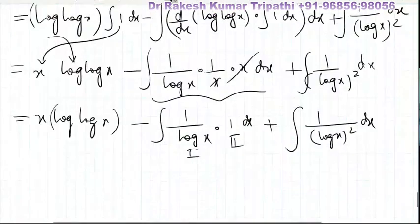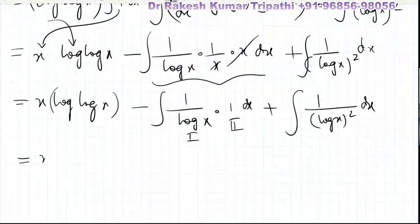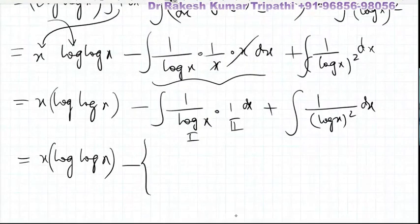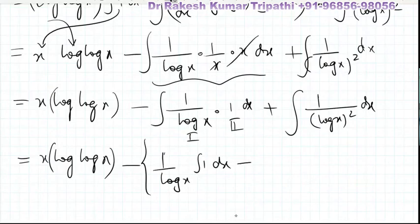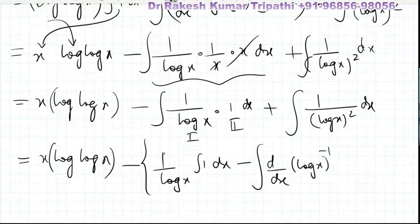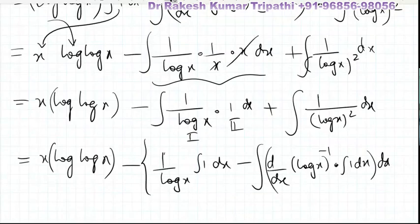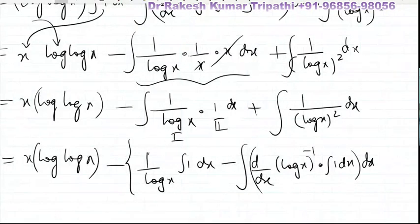So again integration by parts is to be applied: x·log(log x) minus — first function constant, 1 by log x constant, integration of the second function — minus the differentiation of 1 upon log x, which we can write as (log x) to the power minus 1. Note that 1 upon log x and (log x) to the power minus 1 are the same. Integration of 1 dx, plus the integral of 1 upon (log x) squared.